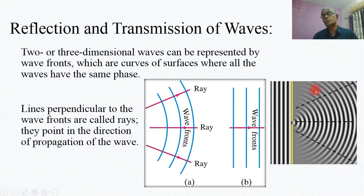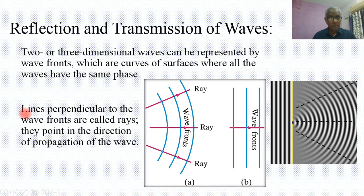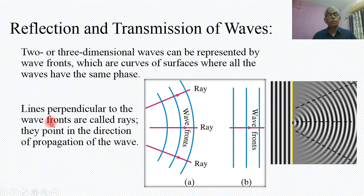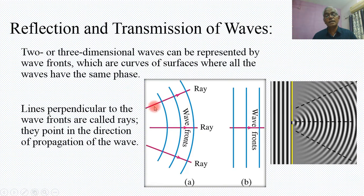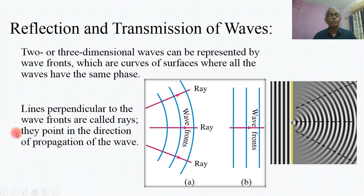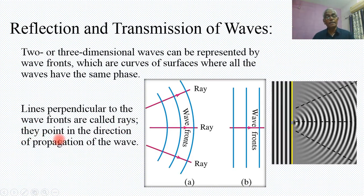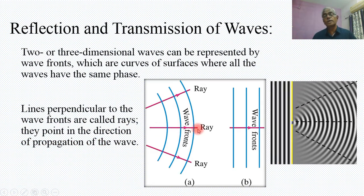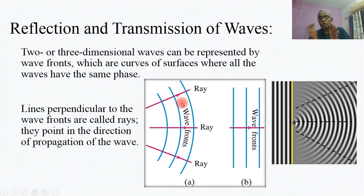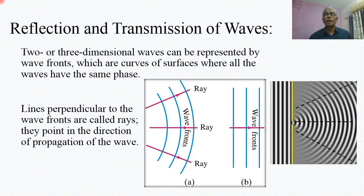In this case, there is a spherical wave front where a phase difference is associated with the lines. Lines perpendicular to these wave fronts are called rays. The rays are pointed in the direction of propagation, moving away from the source.